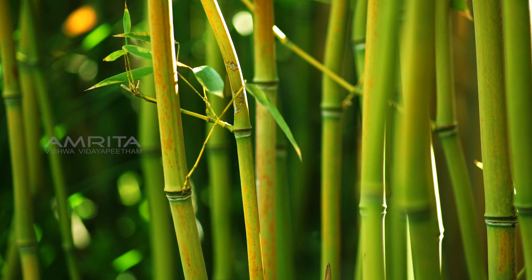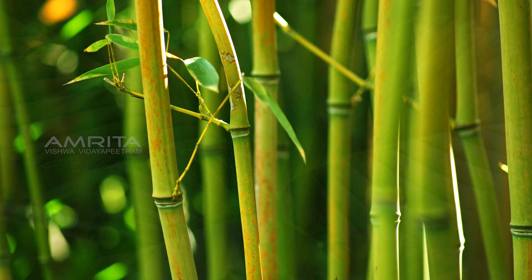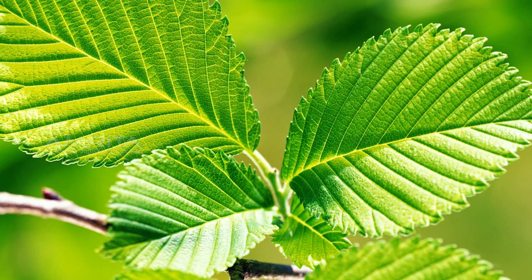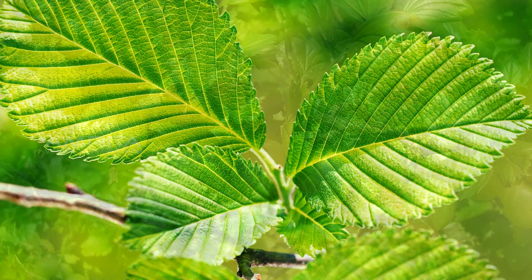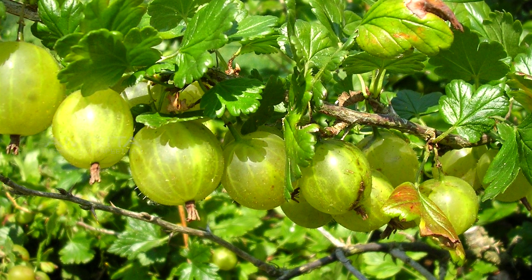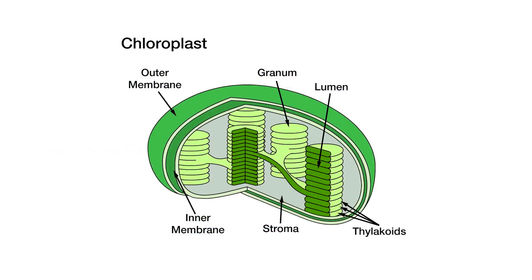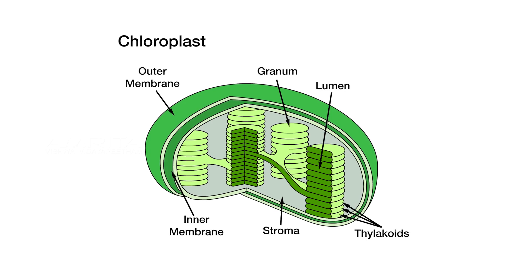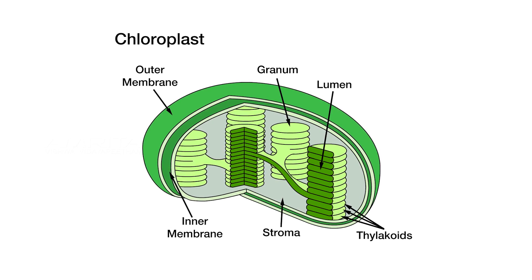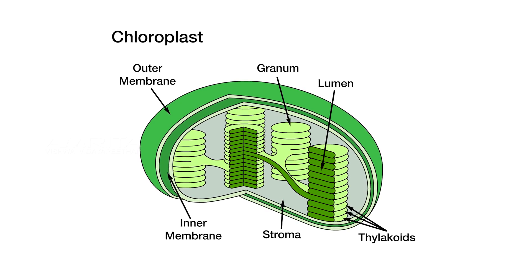The stems, leaves and unripened fruits in all the plants contain chloroplasts. Chloroplasts have a double membrane structure called the chloroplast envelope.